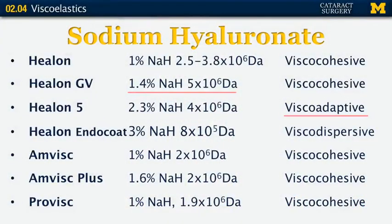Healon Indicote is a newer viscoelastic advertised as viscodispersive — which is interesting because sodium hyaluronate is used in its formulation, whereas usually viscodispersive substances are created with chondroitin sulfate. Amvisc was created in 1983 by Bausch and Lomb and is a little bit less viscous than Healon — its molecular weight is lower than Healon, but it's still viscocohesive. Amvisc Plus is a bit more cohesive, Bausch and Lomb's answer to Healon GV. ProVisc was created by Alcon and is very similar to Healon. All three are pretty similar, and it's your personal preference which one you enjoy using.